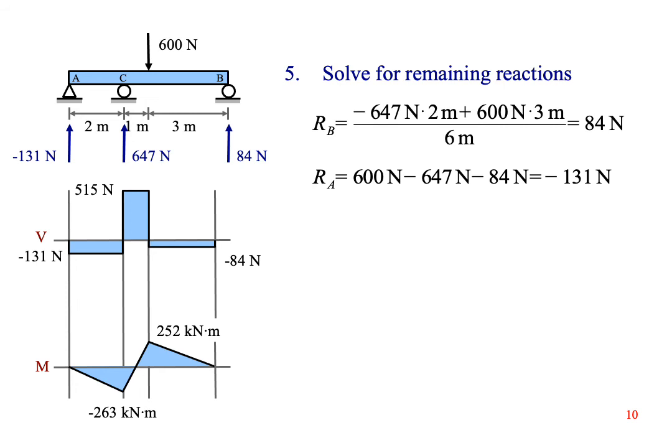Notice that R sub A is negative. This means that the reaction force is actually pulling the beam down. It's preventing the beam from lifting at point A. That's important to know because it tells you that the support has to be a pinned support, not a roller support, at point A.